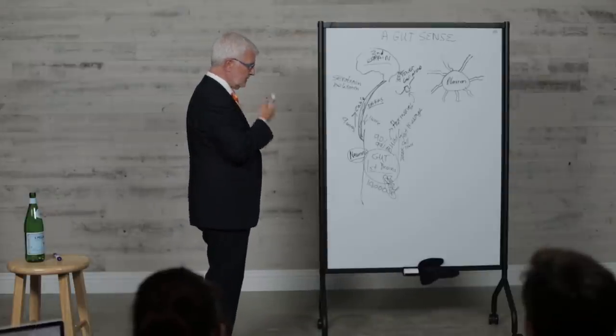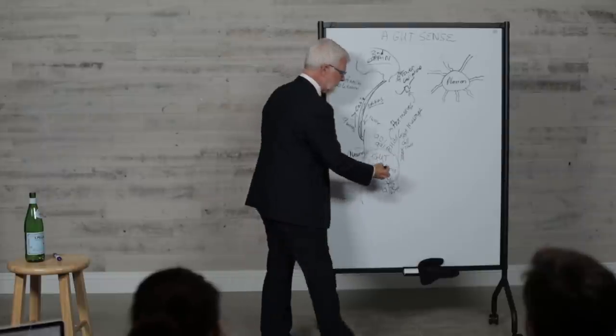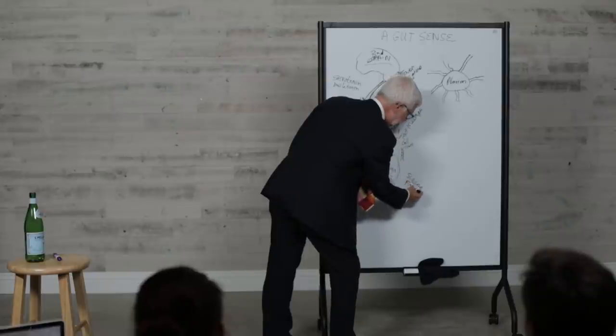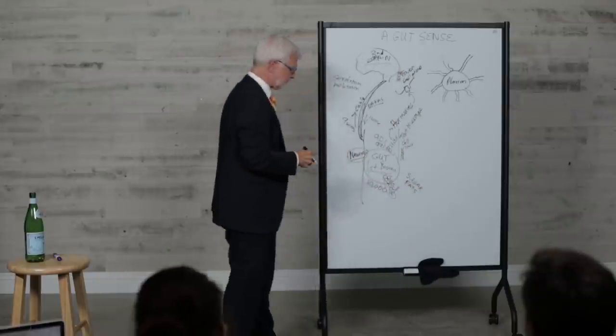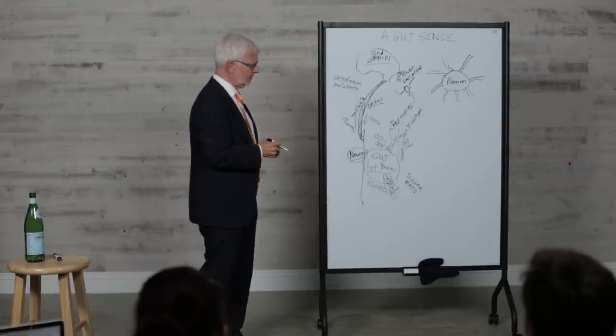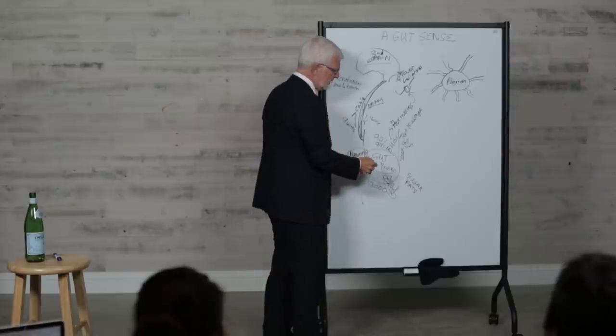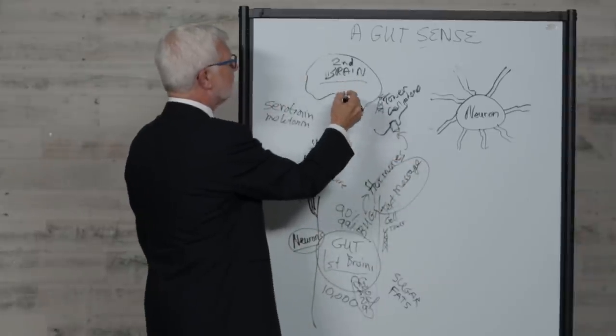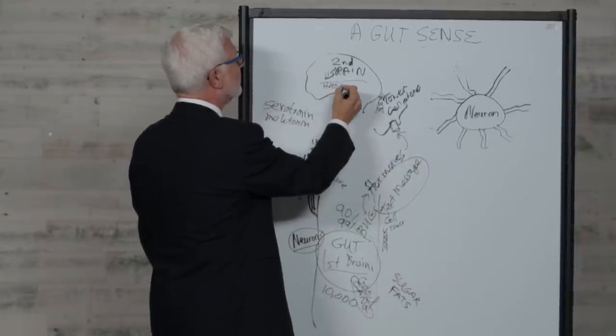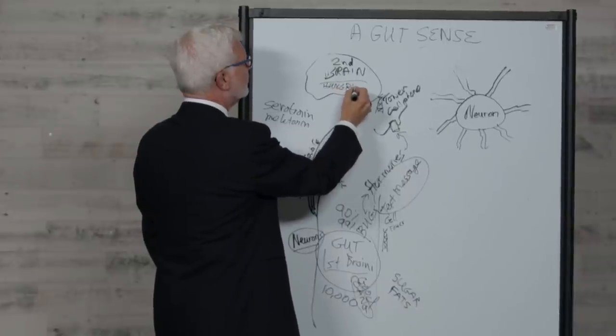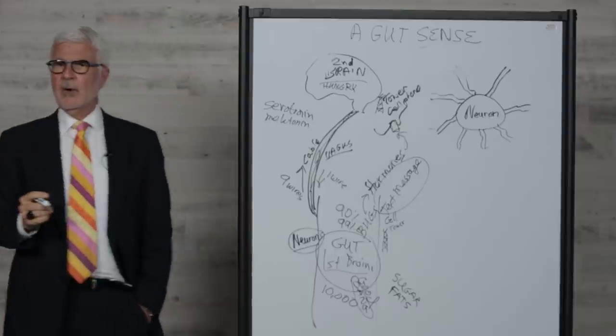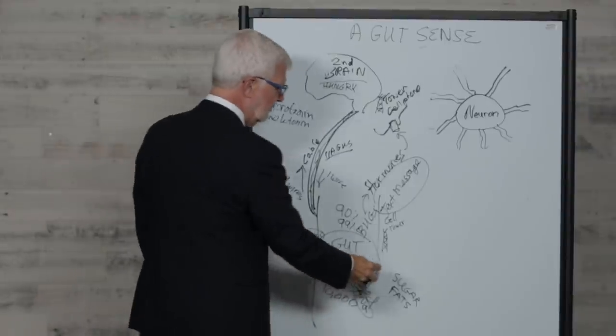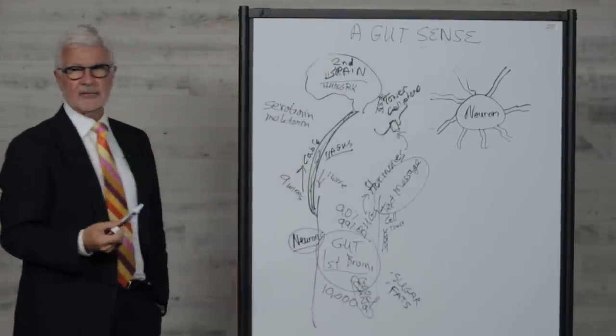The gang members have different food requirements than the good guys. The gang members love sugars, simple sugars, and saturated fats. The good guys can't live on this. The gang members send text messages up to your brain to your hunger centers saying you're hungry, we want more to eat, we want more sugar and saturated fats.